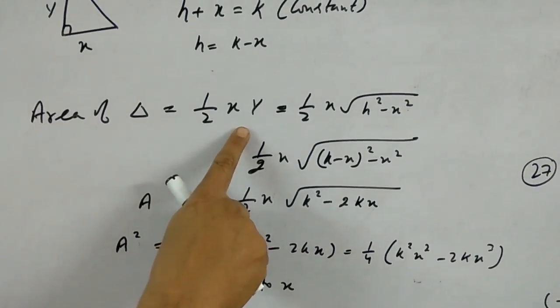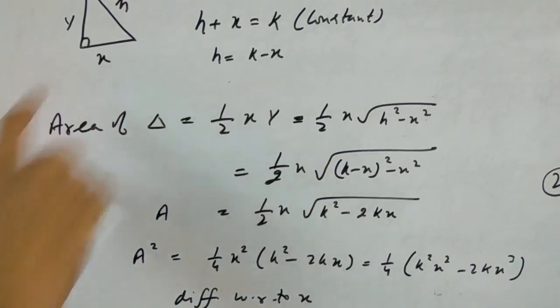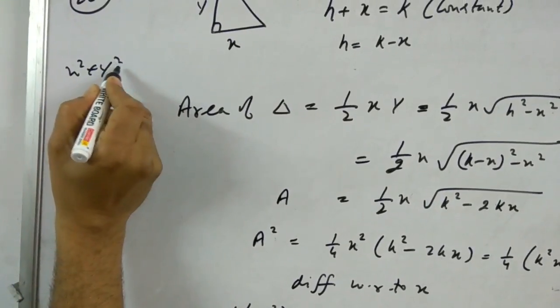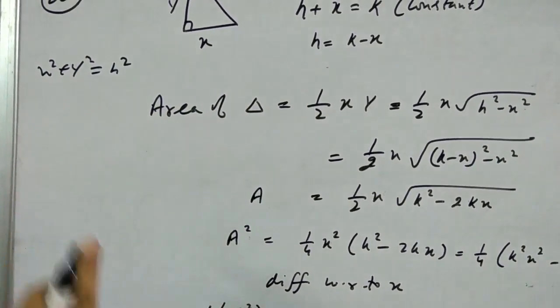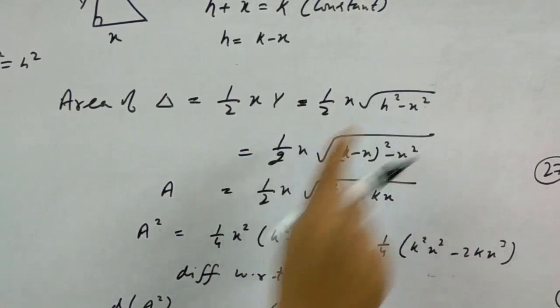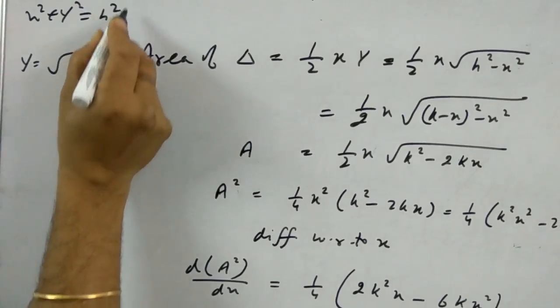Area of right angle triangle is half into base into height, that is half into x into y. But this y, according to Pythagoras theorem, x square plus y square equals h square. So y square is h square minus x square, and y equals root of h square minus x square.